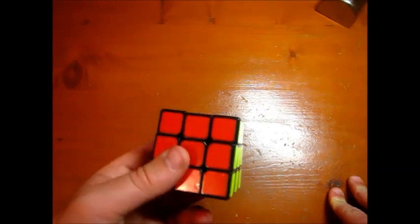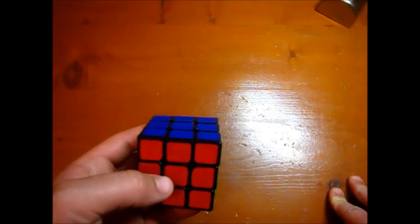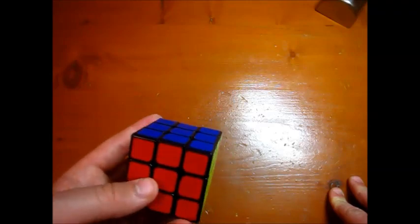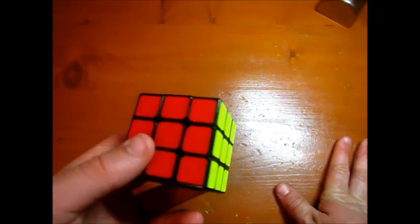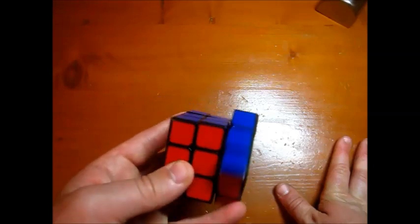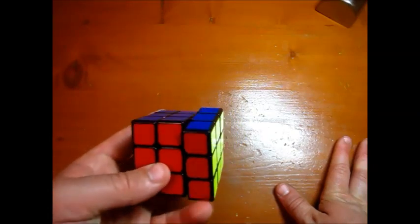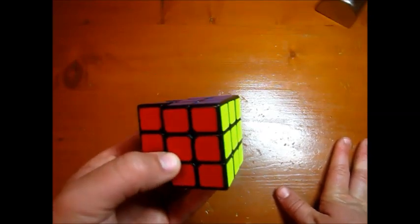depending on how important it is for you to end up with edges oriented. If you could care less which one of the 57 OLLs you get, then by all means ignore this entirely, but if you love the 7 edges oriented cases then it might be worth it for you to spend a few extra moves to get oriented cases.